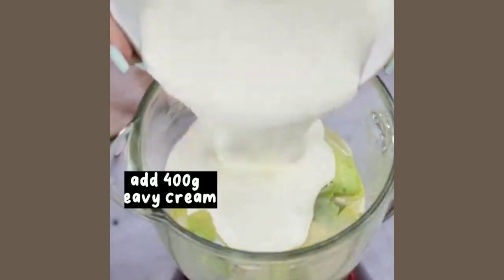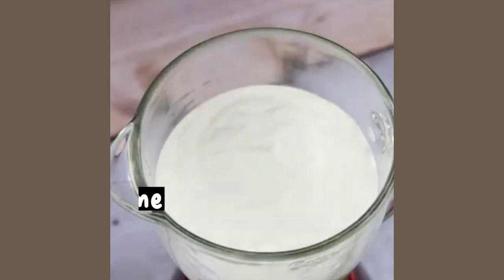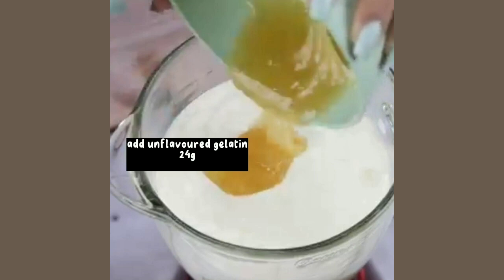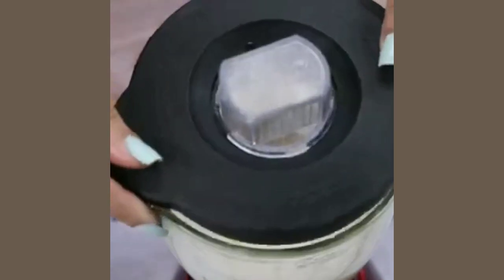Then I will add 400 grams of heavy cream, a lime squeezed out, and finally 24 grams of unflavored gelatin. Now I will beat everything very well until it turns into a homogeneous mixture.